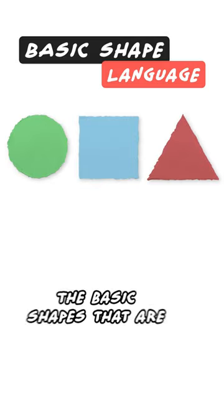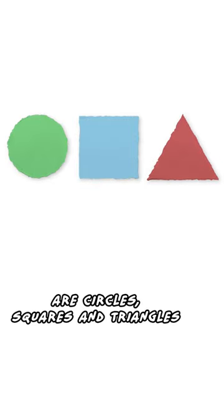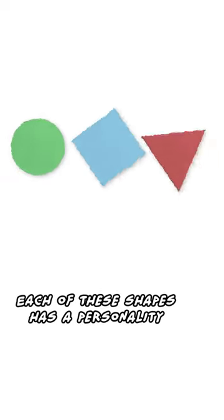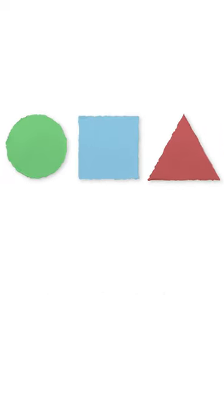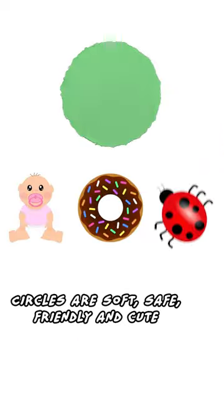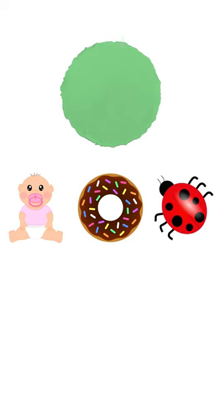The basic shapes that are traditionally taught in shape language are circles, squares, and triangles. Each of these shapes has a personality. Circles are soft, safe, friendly, and cute.